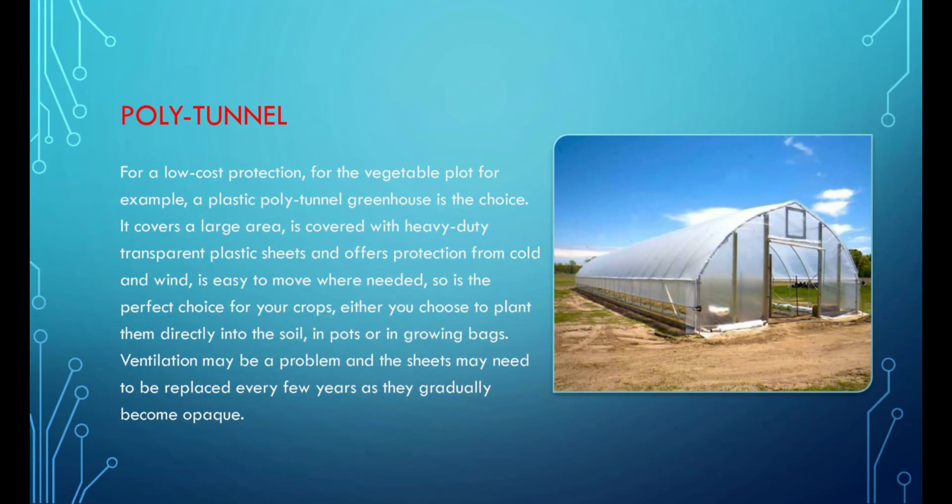For low-cost protection of the vegetable plot, a plastic polytunnel greenhouse is the choice. It covers a large area, is covered with heavy-duty transparent plastic sheets, and offers protection from cold and wind. It is easy to move where needed, making it the perfect choice for crops whether planted directly into the soil, in pots, or in growing bags. Ventilation may be a problem and the sheets may need to be replaced every few years as they gradually become opaque.